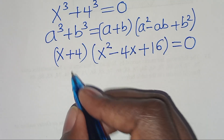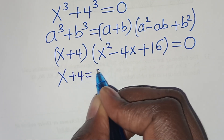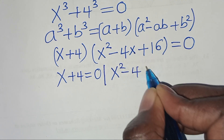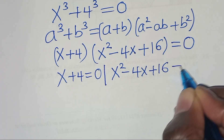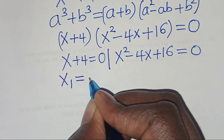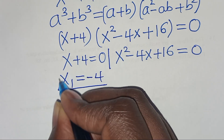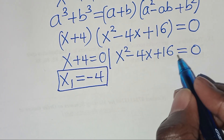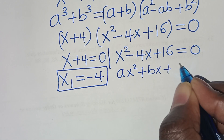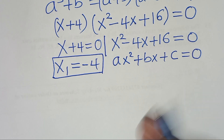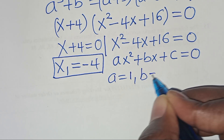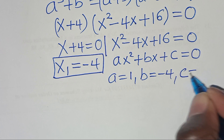So we have two parts: the first part is x + 4 = 0, giving x₁ = -4. The second part is x² - 4x + 16 = 0, which is a quadratic equation of the form ax² + bx + c = 0, where a = 1, b = -4, and c = 16.